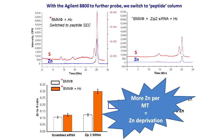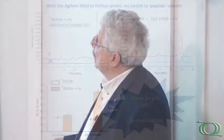With the Agilent 8800, we switch to the peptide column — notice we're seeing intensity around fraction 25. We set the ICPMS to monitor both sulfur and zinc. The zinc intensity is around 3,000–3,500 units, but look at the sulfur intensity — it's massive. This must mean there's a lot of metallothionine waiting to grab something. The sulfur peak we think is a dimer or something similar, since metallothionine can group together one to three units. We haven't proved that yet.